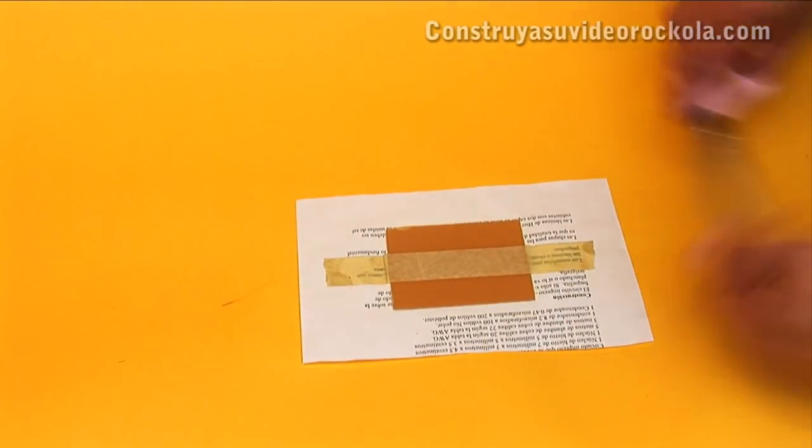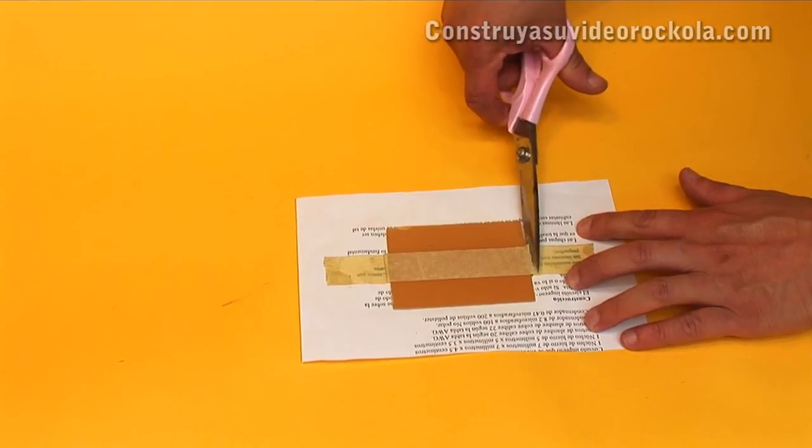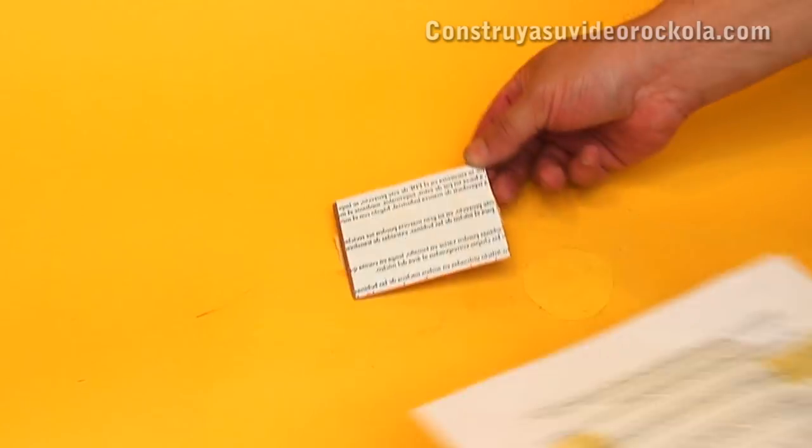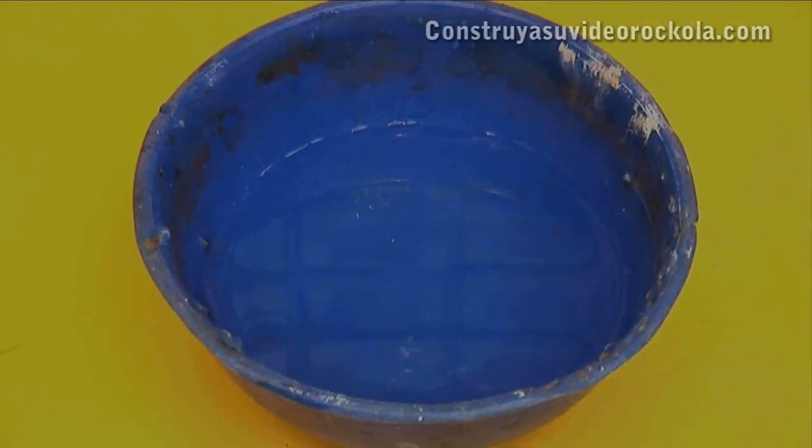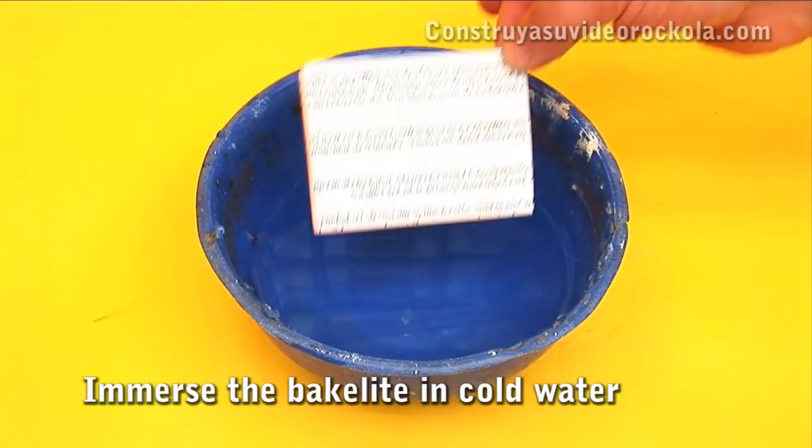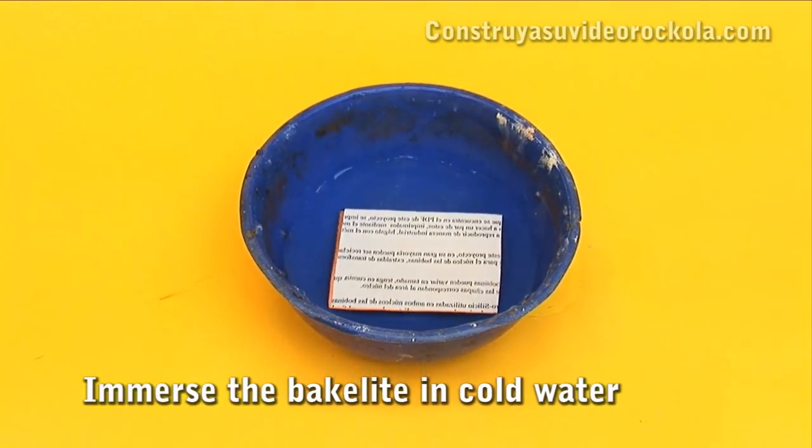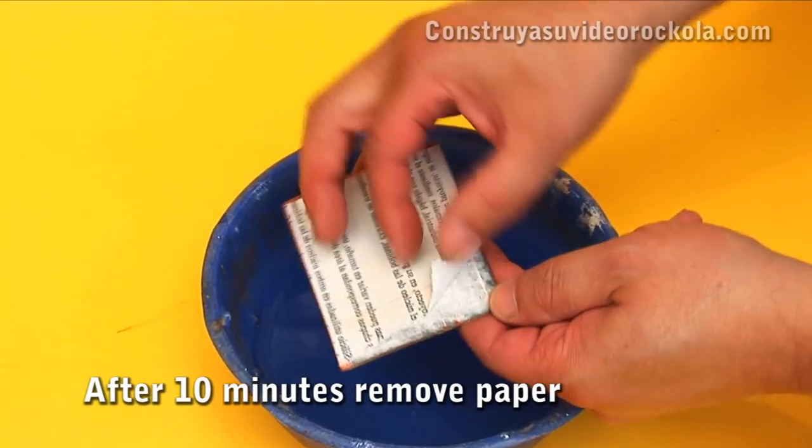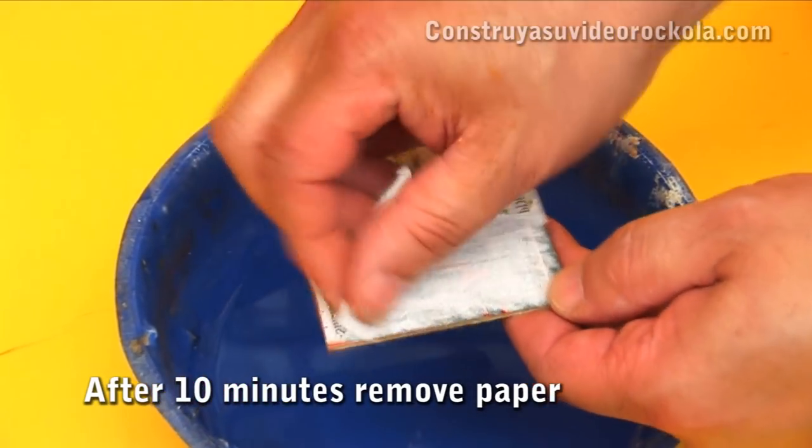We remove the sheet of paper we use to isolate the drawing board. We soak in cold water the bakelite with the paper attached. After 10 minutes the paper should be damp enough to be able to remove it carefully.